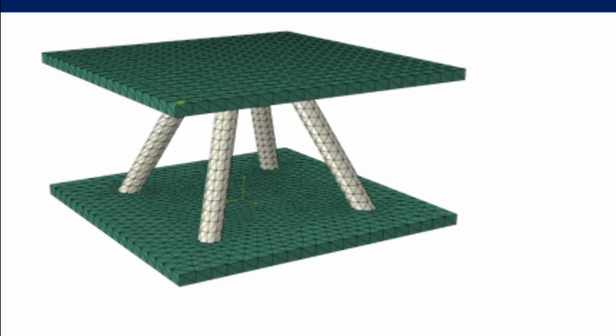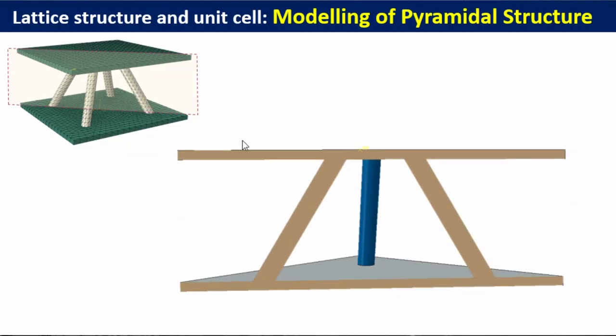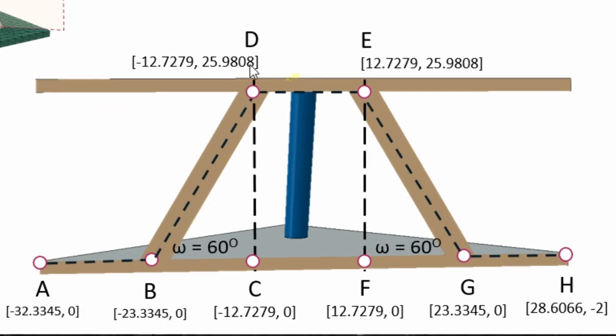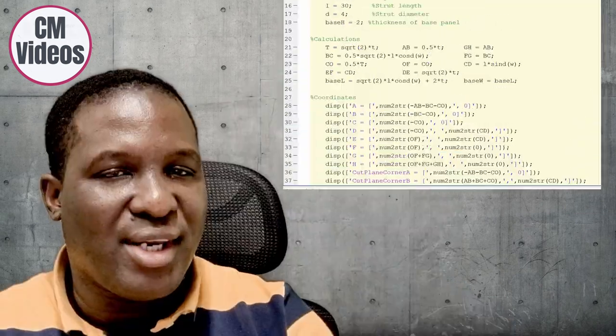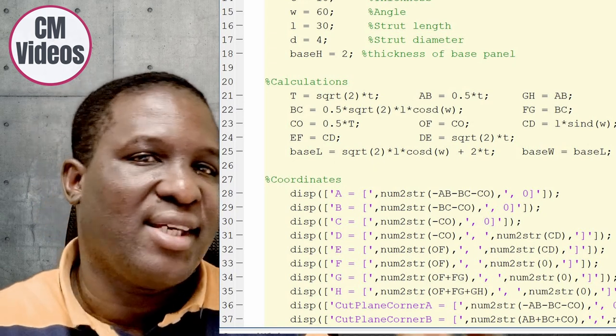If we section through the diagonal of this lattice structure, we begin to see the relationship between the parameters discussed earlier. For example, the length of this truss is 30mm and the angle is 60 degrees. I wrote a MATLAB script that helps you to automatically calculate these numbers and positions for different strut lengths. I'll be putting the MATLAB script in the description section of this video so that you can download it.